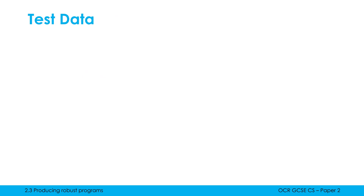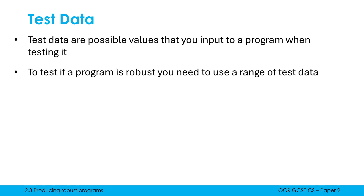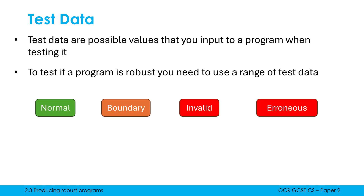For either of these two types of testing, you need to use a range of test data. Test data are possible values that you input to a program when testing it. The range of test data is really important because we want to see if our programs are robust — we want to see how the program behaves under slightly unusual circumstances. There's a risk that a programmer just types in what they're hoping the user types in, but anything unexpected could cause tricky errors. There are four types of test data you need to be aware of.